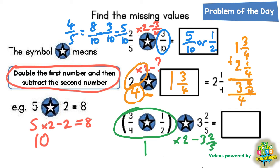Well if the first bracket was worth 1, 1 times 2 would be 2. And then we need to subtract 3 and 2 fifths. Now this is obviously going to send us into negative numbers because 2 is smaller than 3 and 2 fifths.